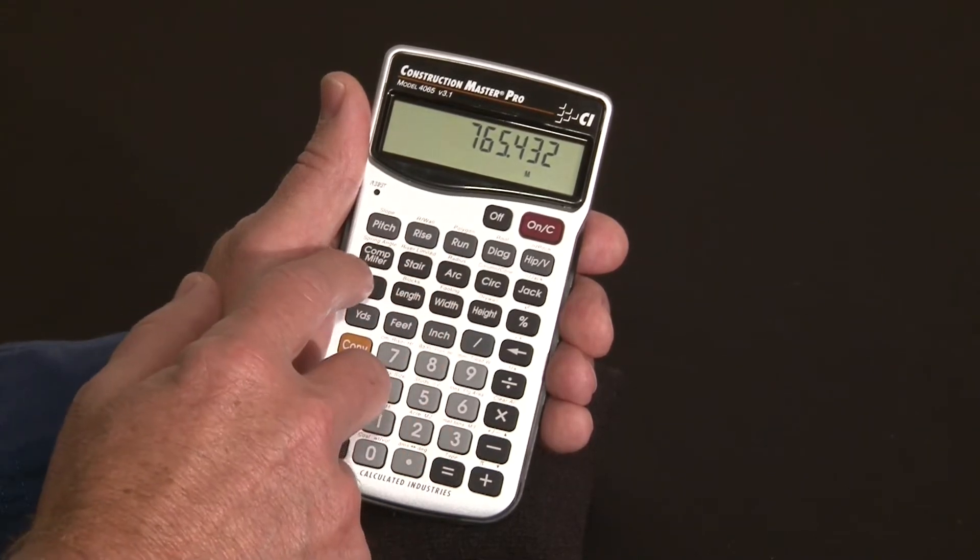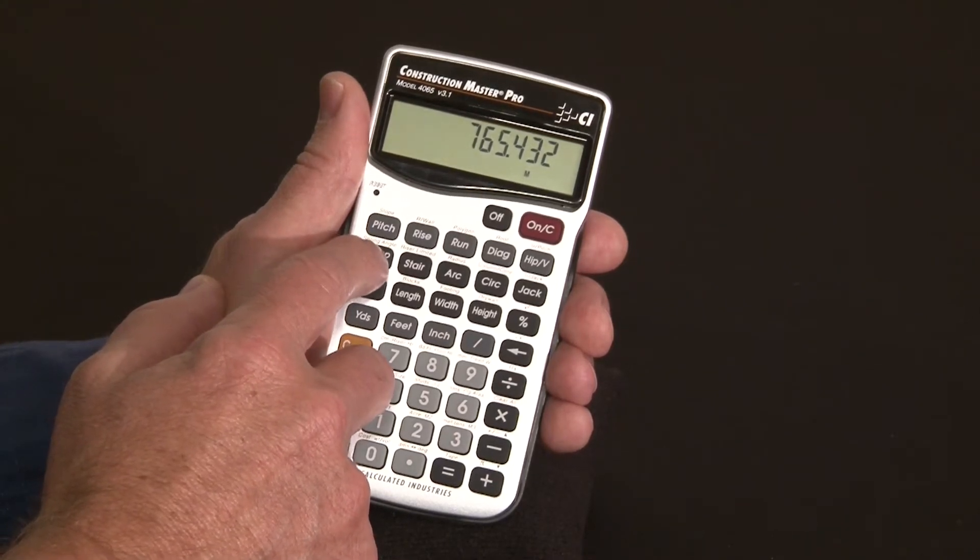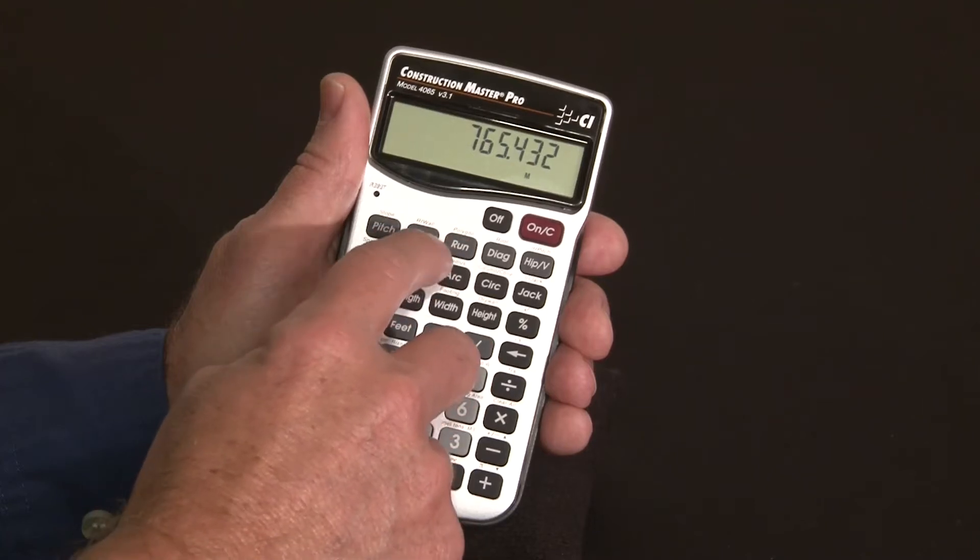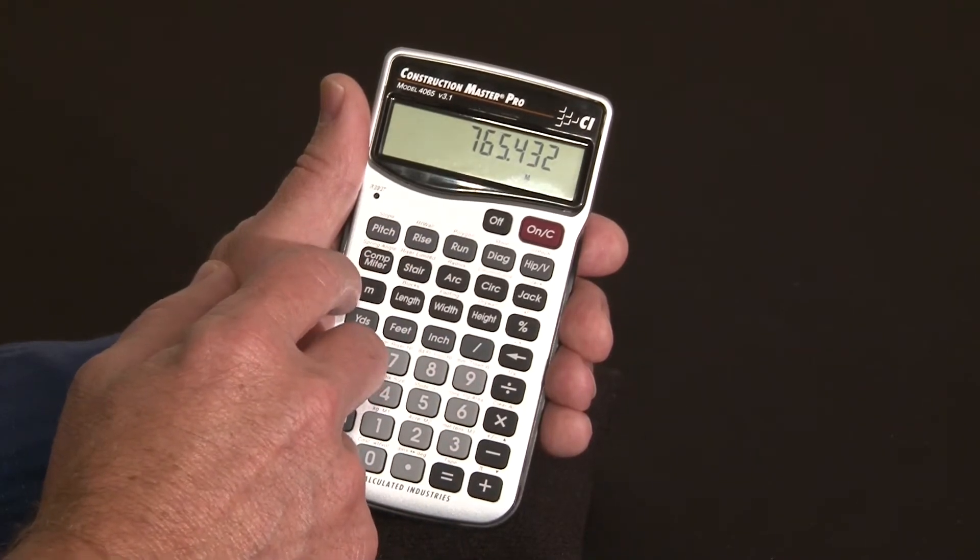The compound miter key solves for bevels and crown molding. There's a row of second functions above these keys. You can't see all of them, but it says rake walls. We have polygons, roofing, columns, and cones.